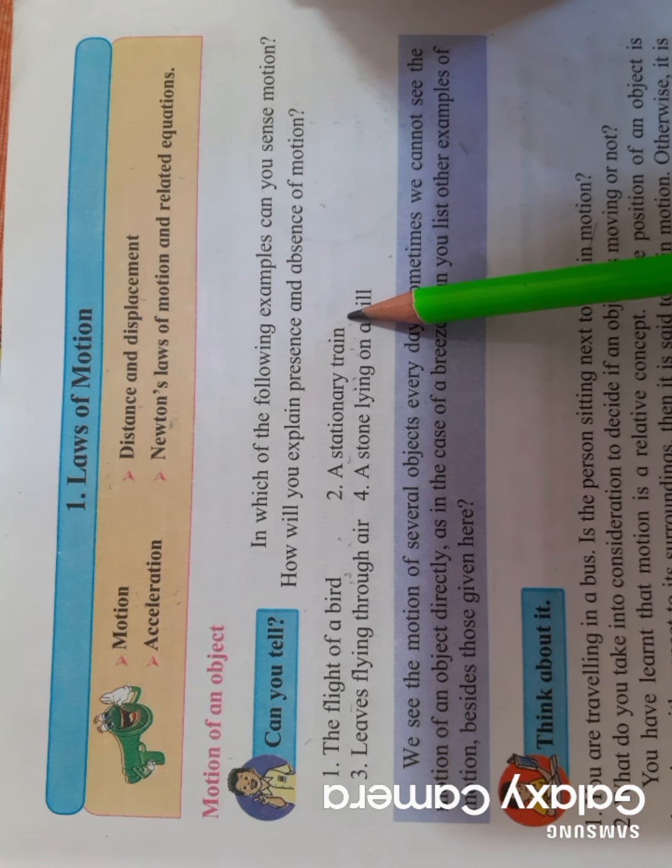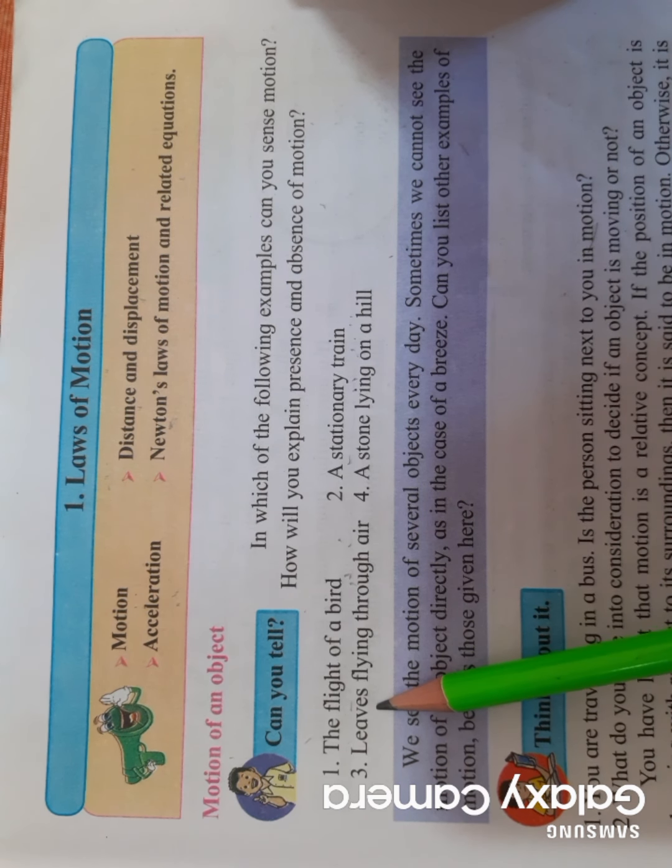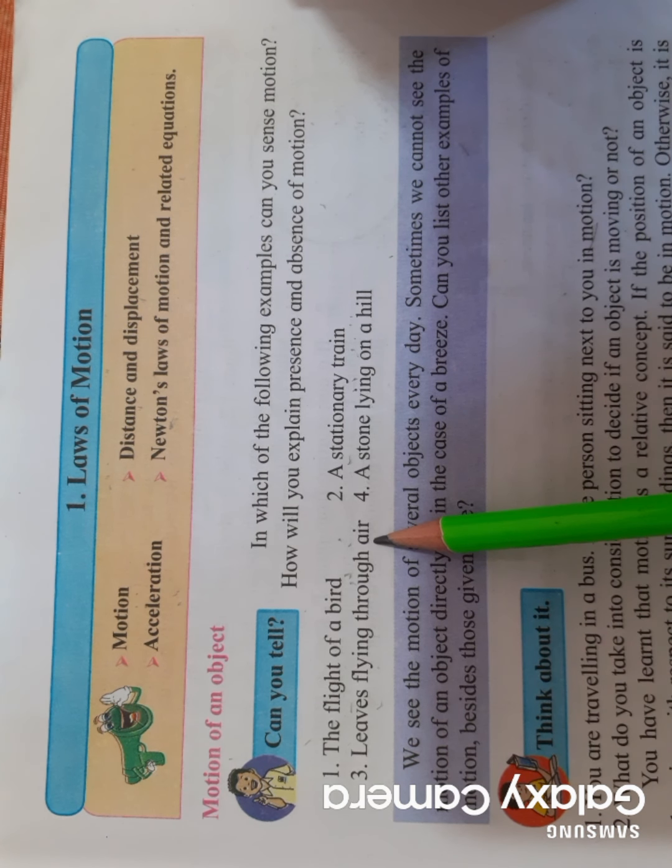Third example: leaves flying through the air. There are leaves falling from the tree or flying in the air. Can we say motion is there? Yes, obviously. Why? Because the leaves are flying, moving from one place to another because of the air.